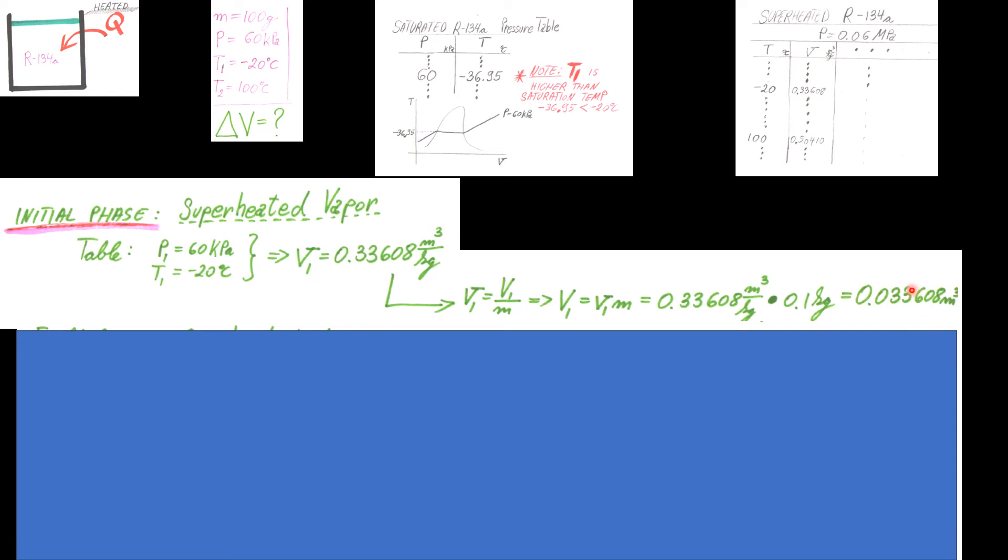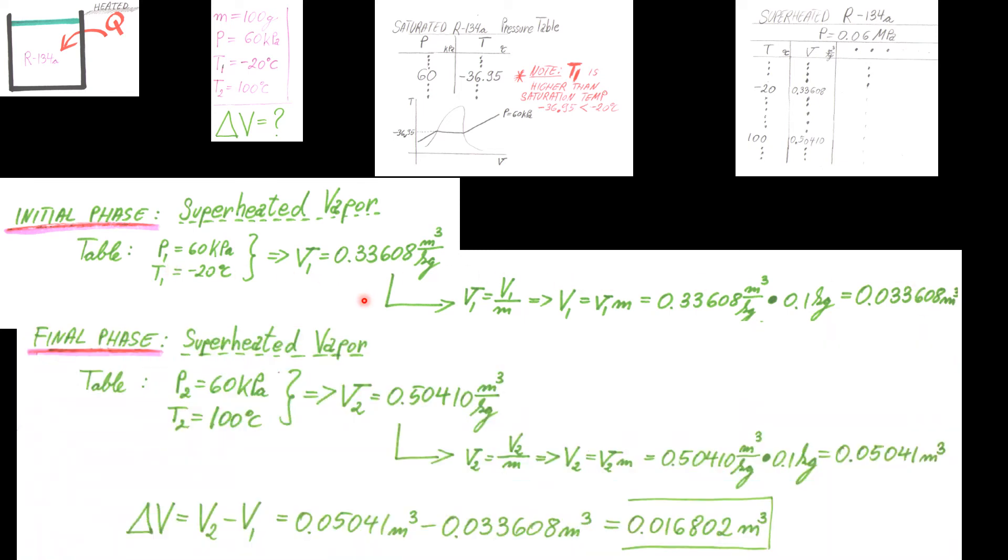We're going to do exactly the same step for our second temperature. Pressure, temperature, we found it already right here in the table. Use the exact same formula we did here. We're going to find V2, our second volume.